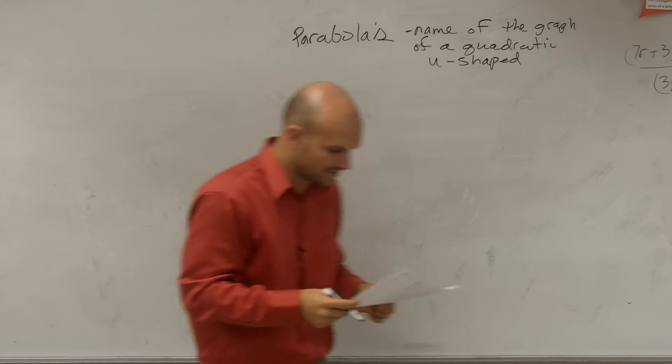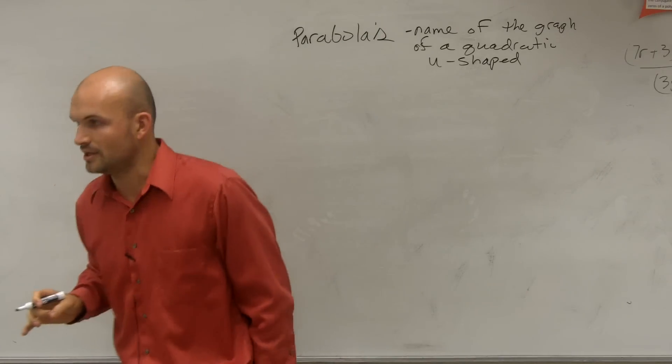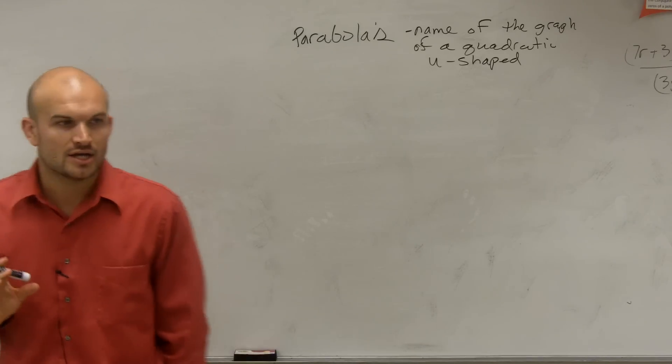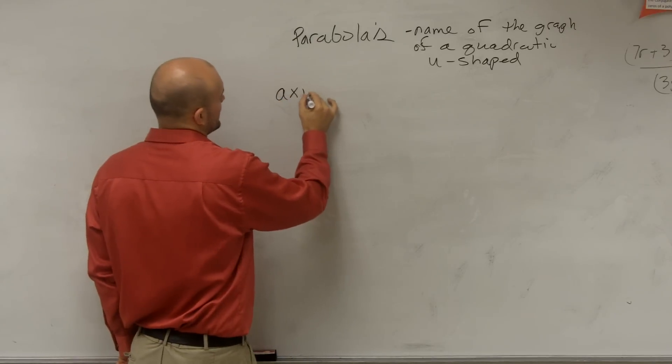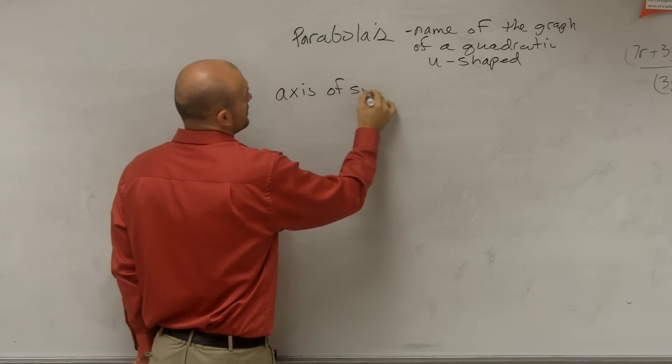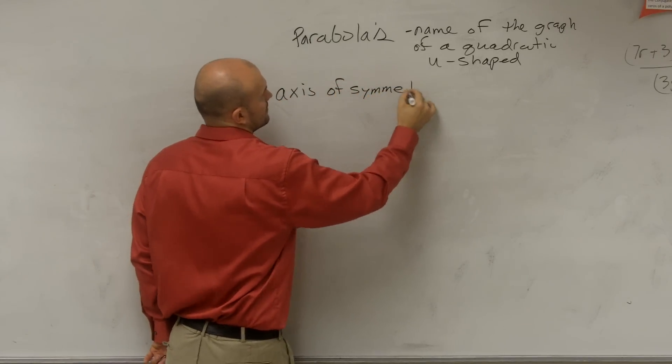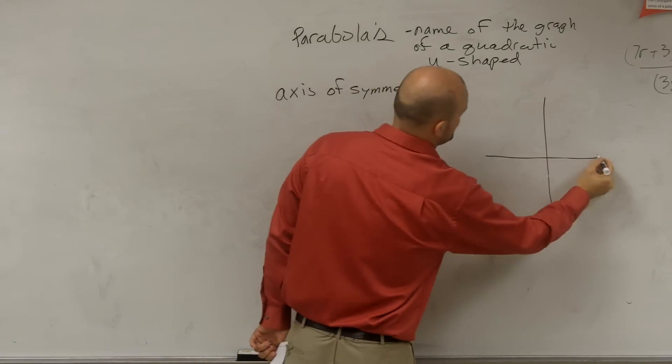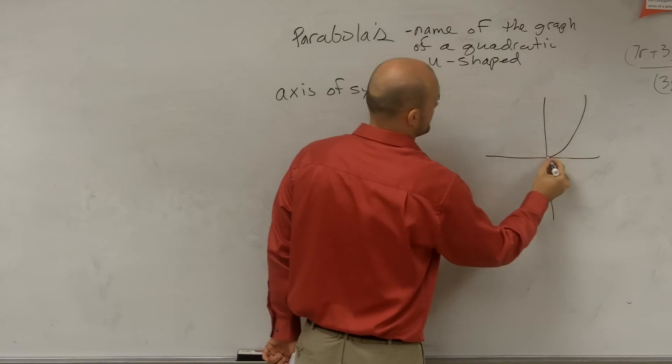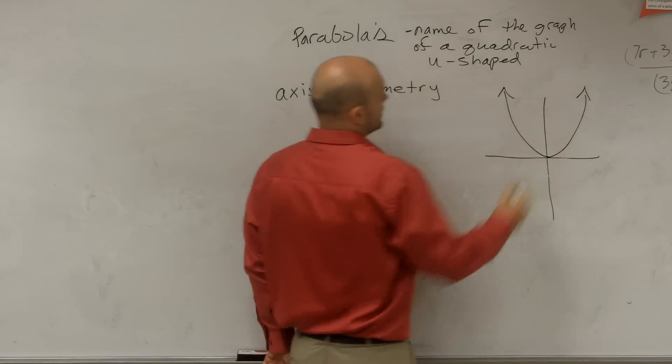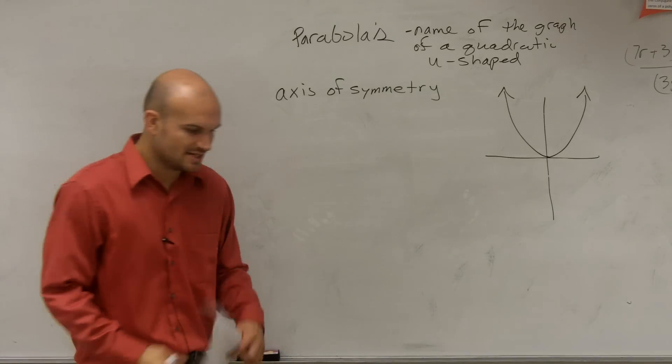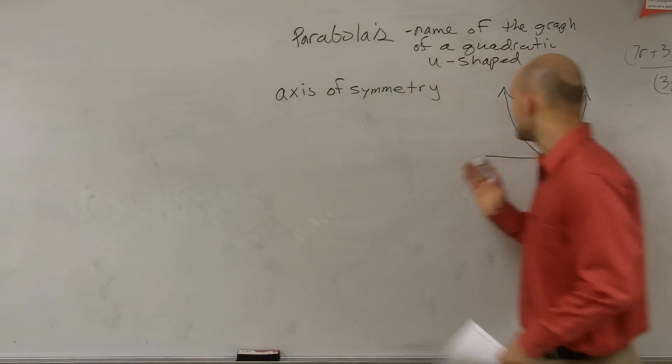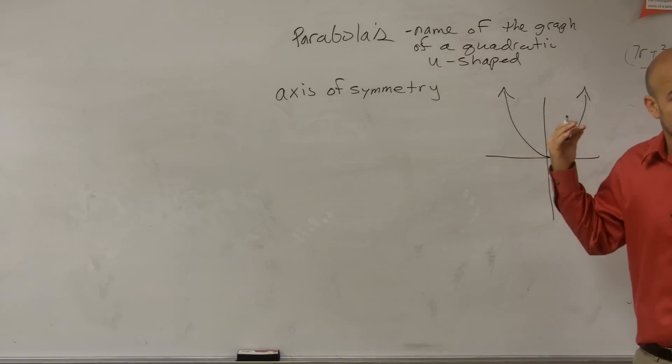All right, so we'll get into that a little bit. Now, the next thing that we want to talk about is on every parabola, there's a couple points that we need to highlight. For every parabola, there's one important thing. We have an axis of symmetry. So let's just kind of pretend here's my parabola. It's a U-shaped graph. And what you want to see is you want to understand that this parabola has an axis of symmetry, meaning it's symmetrical.